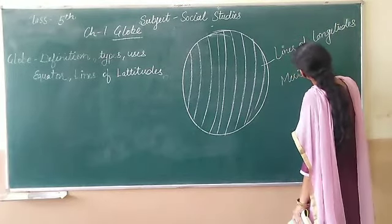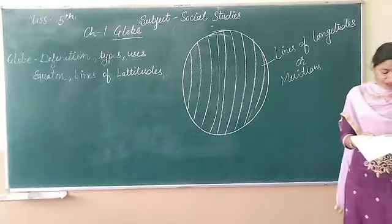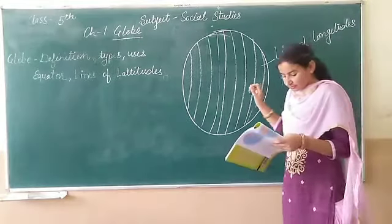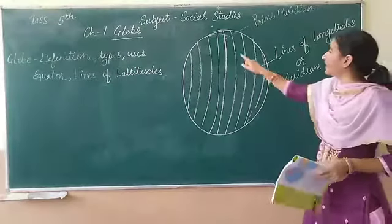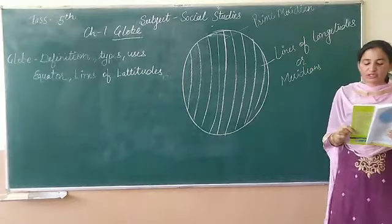The line of longitude which passes through Greenwich, near London in the UK, is called the Prime Meridian. The Prime Meridian divides the Earth into two hemispheres.